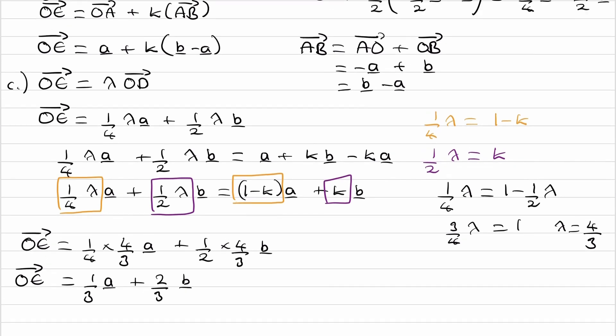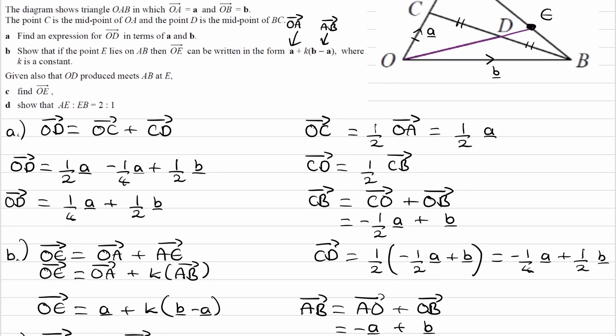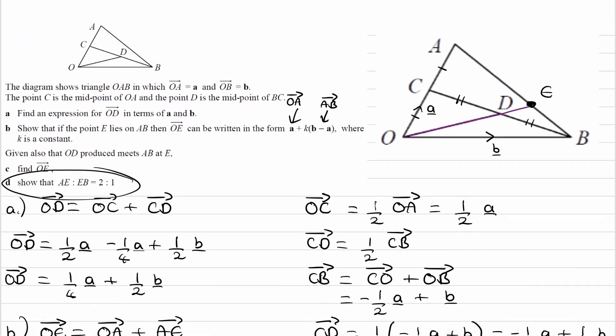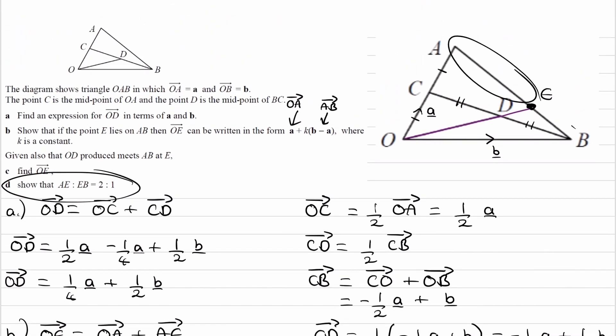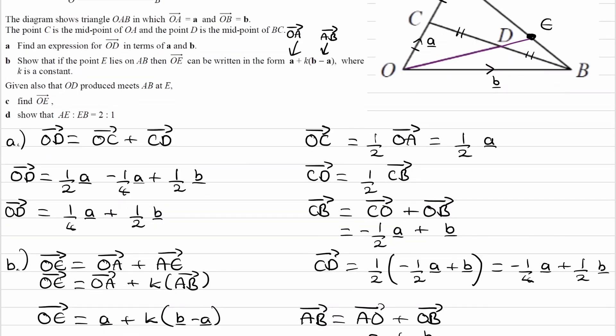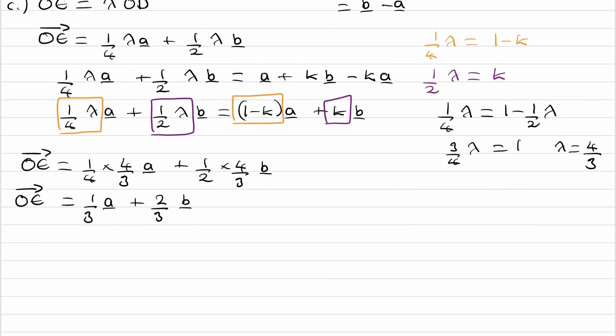Finally, for the last part, show that AE to EB, so the ratio of these two lengths is 2 to 1. Let's work out the vectors AE and EB, and once we have them we should find that AE is twice as big as EB. To work out AE, well AE is the same thing as AO plus OE.